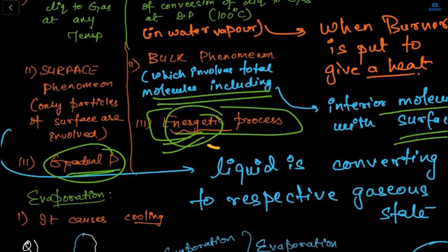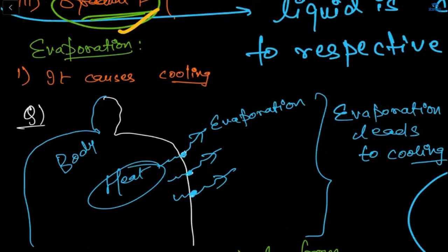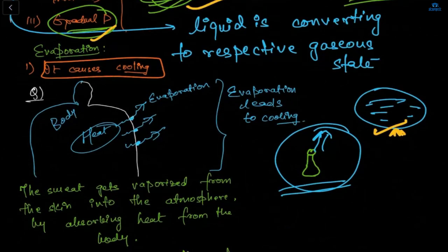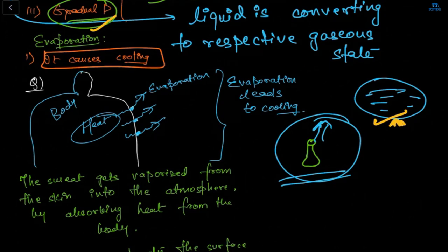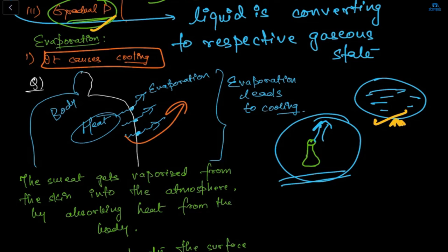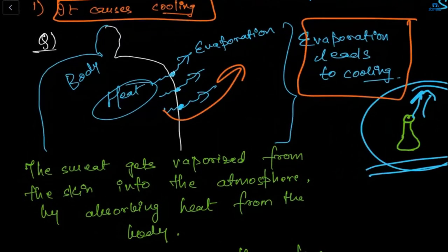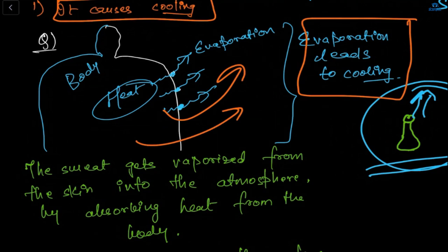Evaporation causes cooling. For example, human beings sweat, and the sweat gets vaporized from the skin into the atmosphere by absorbing heat from the body. After the sweat evaporates, our body starts feeling cool. So evaporation leads to a cooling effect — you have observed this cooling feeling after sweating.